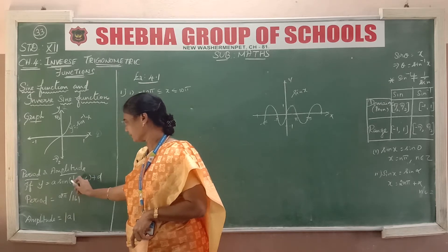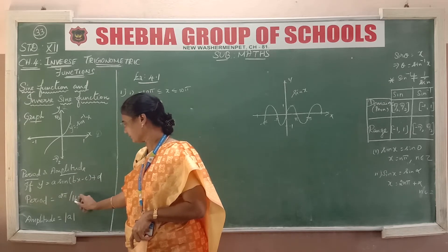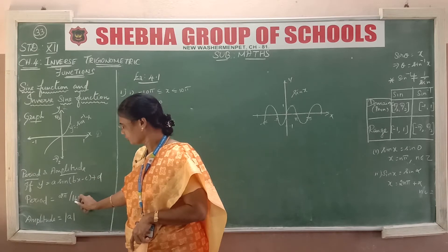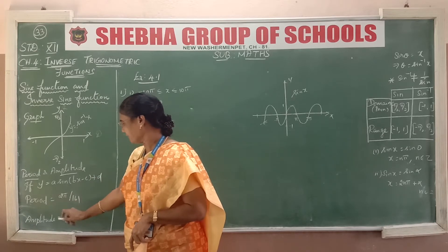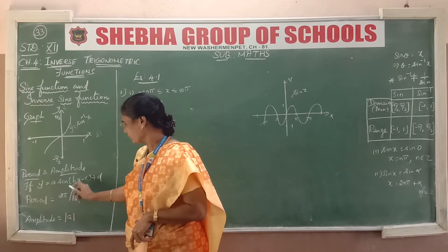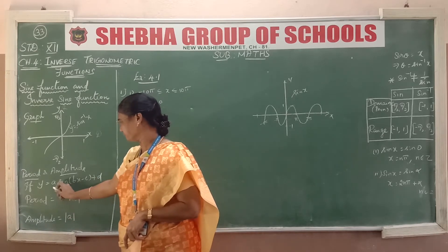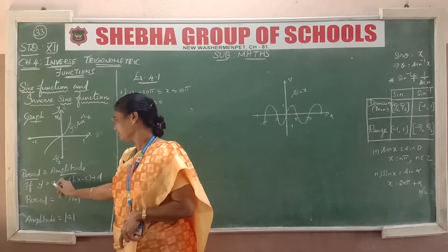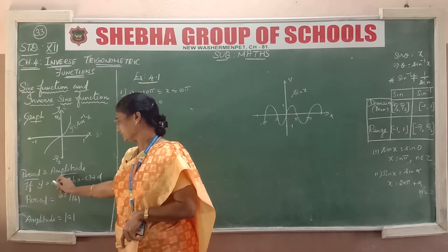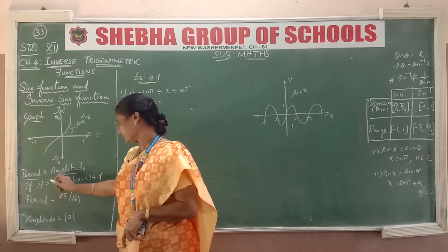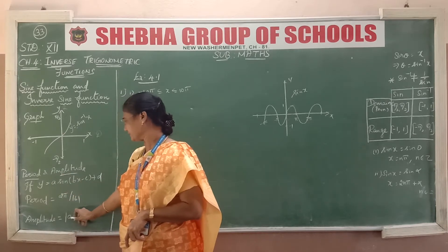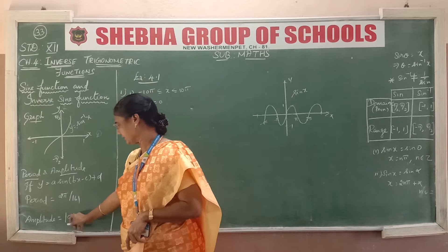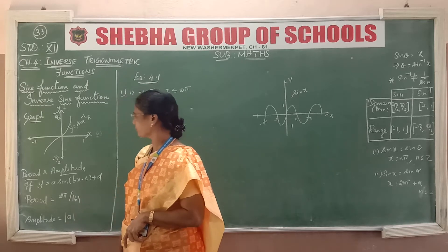Suppose b is negative; if you look at this, it will be positive due to the modulus. Next, the amplitude is the modulus of a — that is the coefficient of sine. Suppose it is negative; if you look at this, it will be positive. It will be modulus.